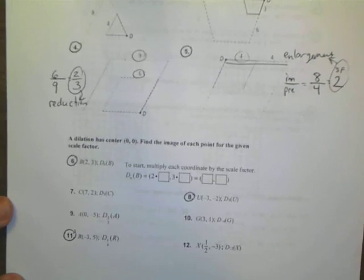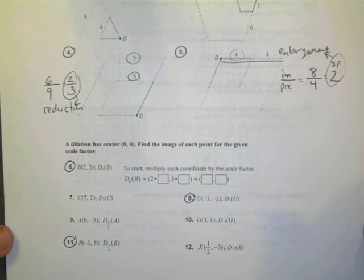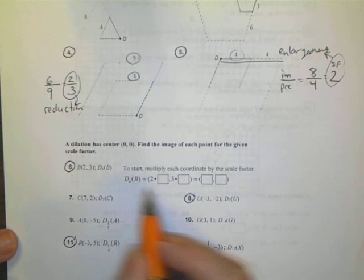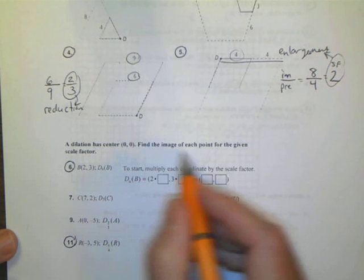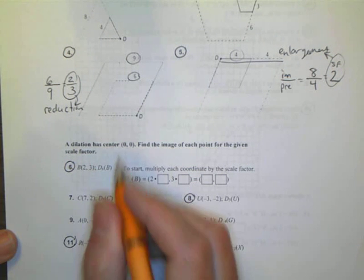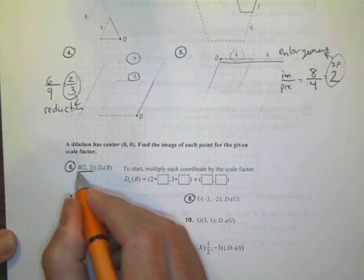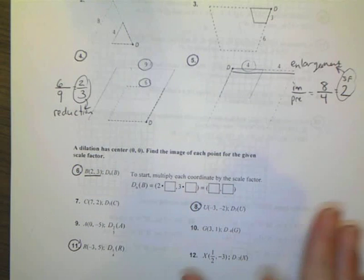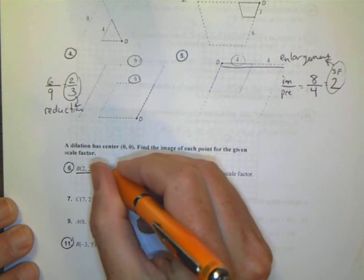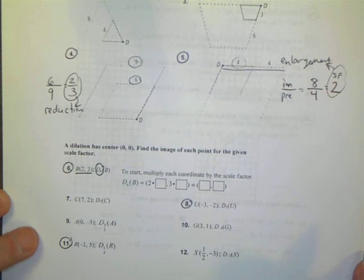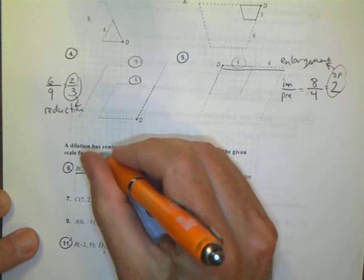Looking at the next set of questions, number 6, 8, and 11, they give you a sample of how to set this problem up. It says the dilation has a center of (0, 0), find the image of each point for the given scale factor. The first number they give you is the point 2, 3. The scale factor is the number written right here, which in this case happens to be d6.